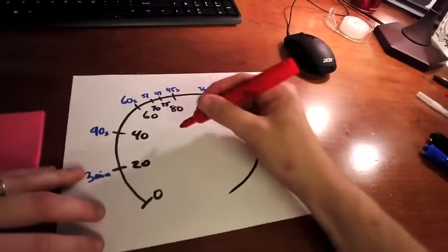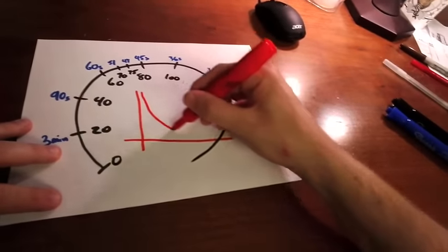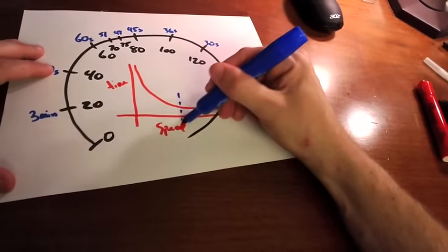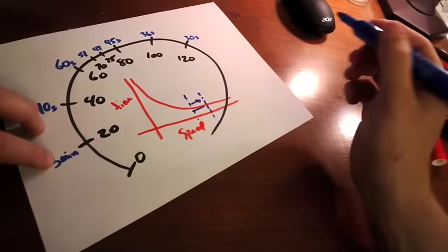The relationship between the speed you go and the time it takes you to get somewhere is what we call an inverse relationship. It looks kind of like this. It's just another way to show that the faster you go, the less that speeding helps you. It really doesn't save you any time.